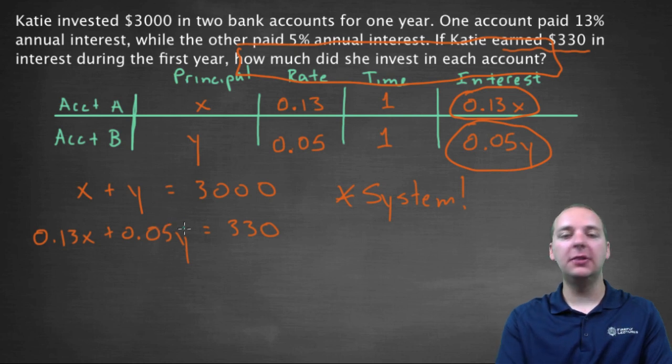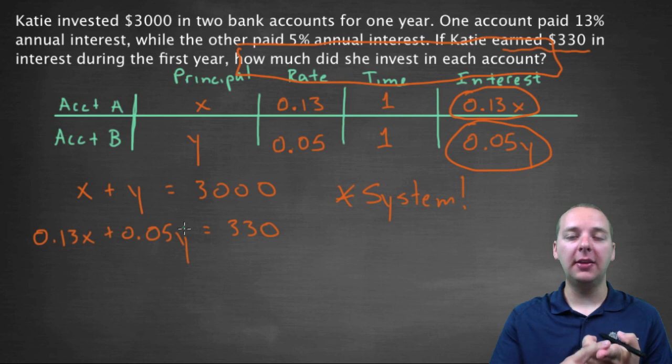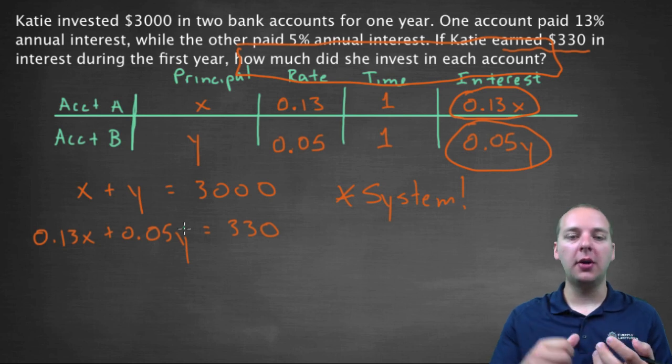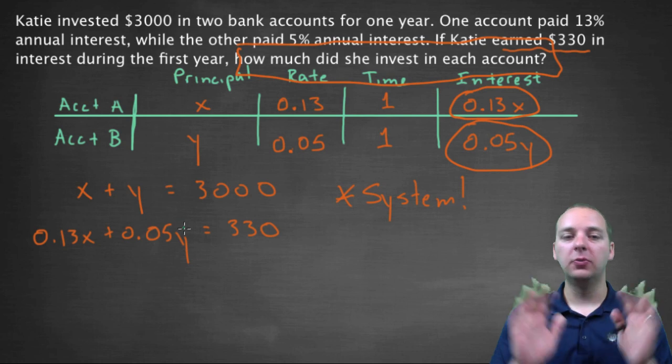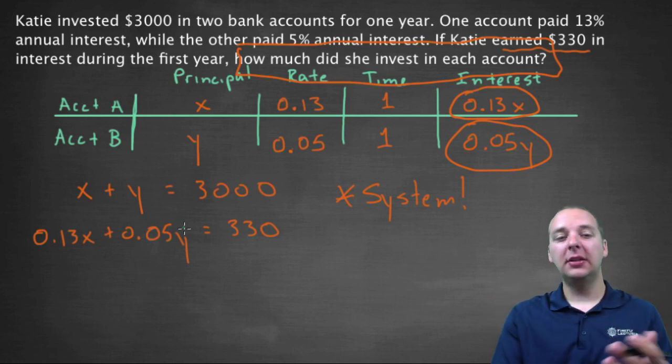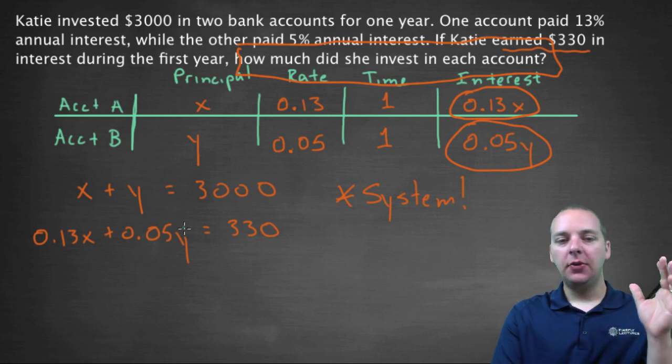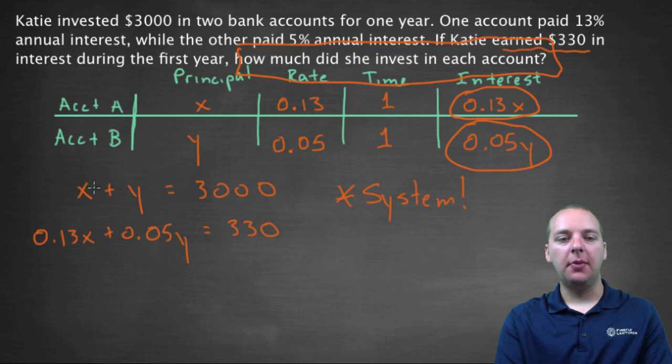Now how do we solve the system? Totally your choice. You can use the graphing method, which I wouldn't recommend, that's not really a great method for this particular problem. Substitution method, that would work awesome. Or the addition method, or elimination method, that would work awesome. Totally your choice. Personally, I think I will do substitution method. I've got a coefficient of one for the X and the Y. That sounds easiest to me.